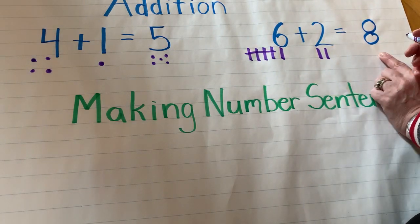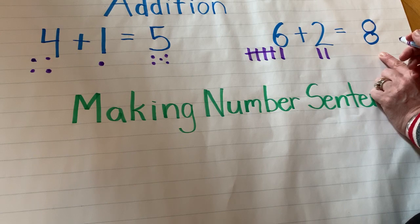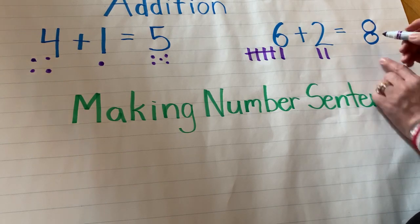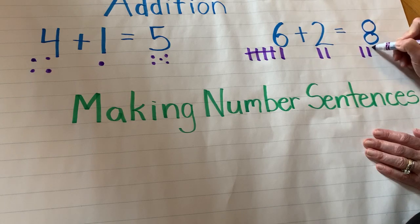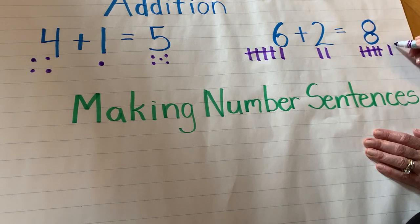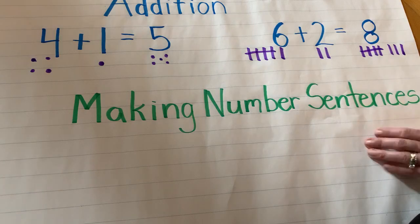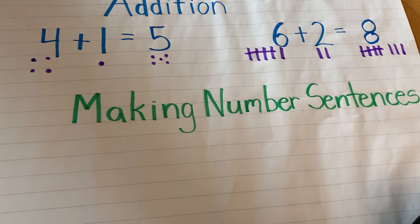And I need you to show me using pictures for the total, the sum, the amount all together. 1, 2, 3, 4, 5, 6, 7, 8. Now you know how to draw pictures or make dots under the numbers to show the amount.